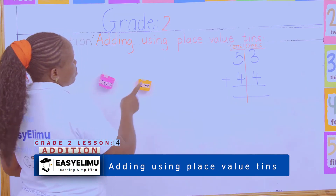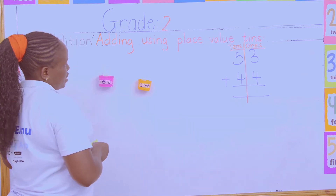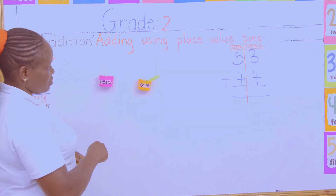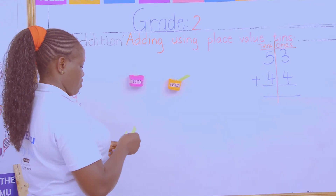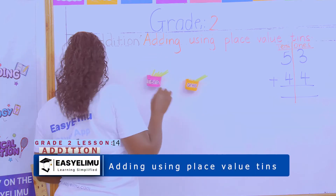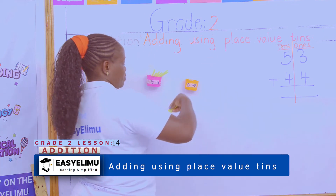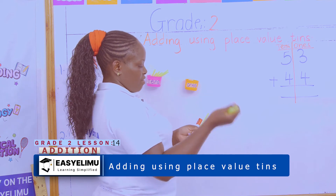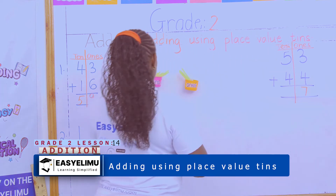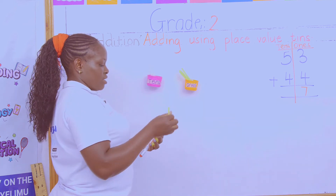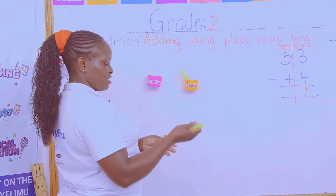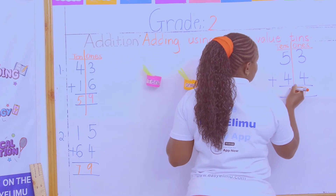In the ones place value I need one, two, three — then one, two, three, four, five — then one, two, three, four. I count all the straws in the ones place value: one, two, three, four, five, six, seven — so in the ones I have seven. In the tens place value I count: one, two, three, four, five, six, seven, eight, nine — so I have nine tens.